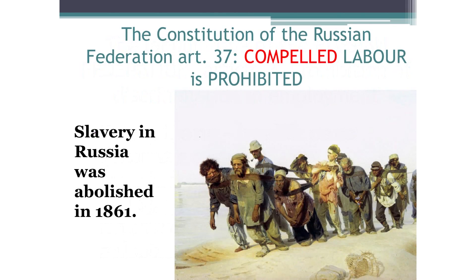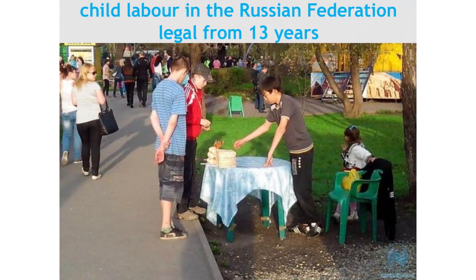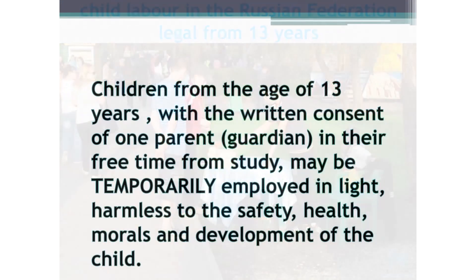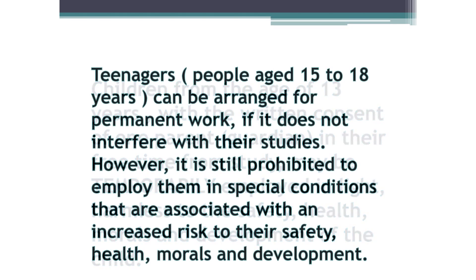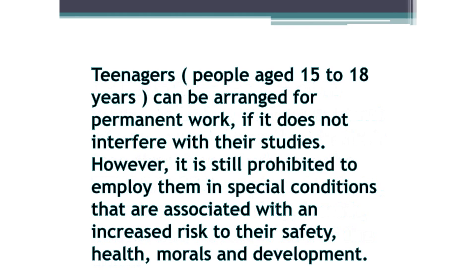Forced labor is prohibited in the Russian Federation. Slavery in Russia was abolished in 1861. People can legally work from the age of 13, but only with written consent from parents or guardians, only during time free from study, and only in temporary, safe work. Starting from the age of 15, you can get a permanent job if it does not interfere with studies. Teenagers are prohibited from working in conditions of increased health risk.